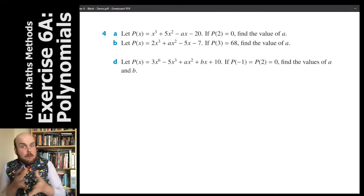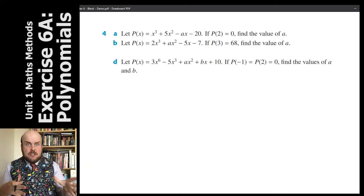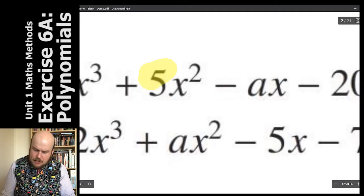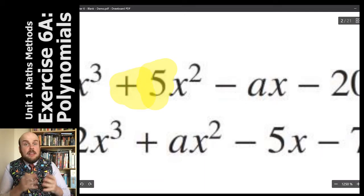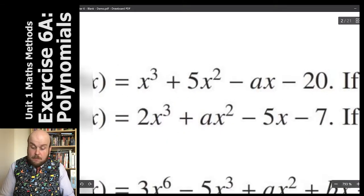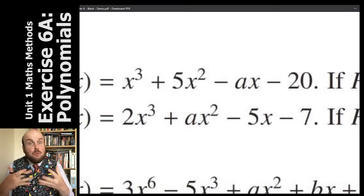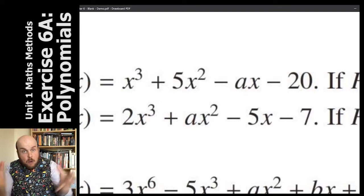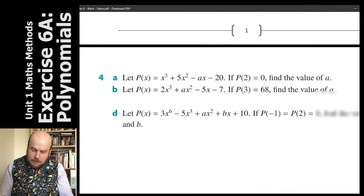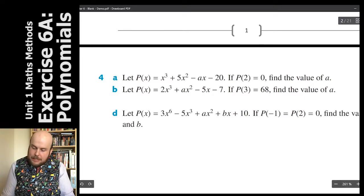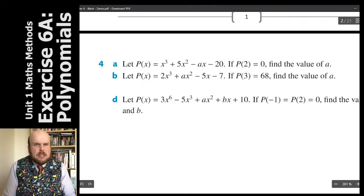Now this is the real meat of why we need to be able to do this. Often you'll be given a problem where one of the coefficients is missing. A coefficient is the number in front of the letter — that number is working together with a pronumeral. So here we let p of x equal to x cubed plus 5x squared minus ax minus 20. Now if p of 2 is equal to 0, find the value of a. We want to solve for this letter a.